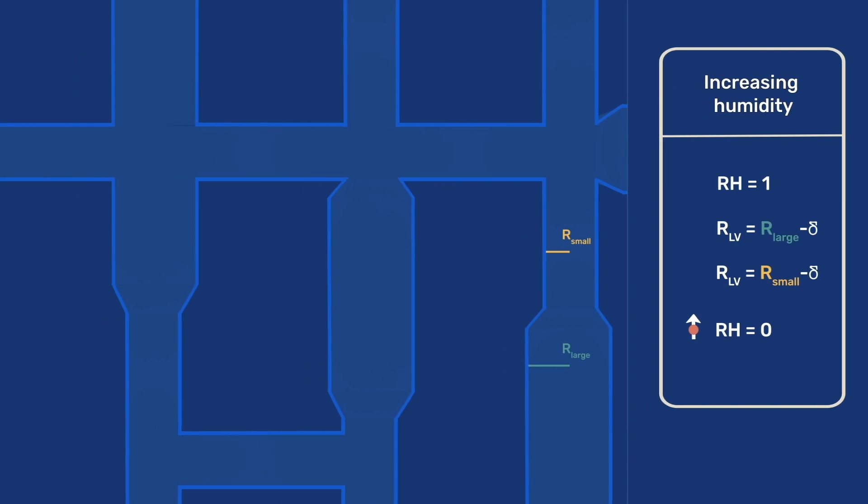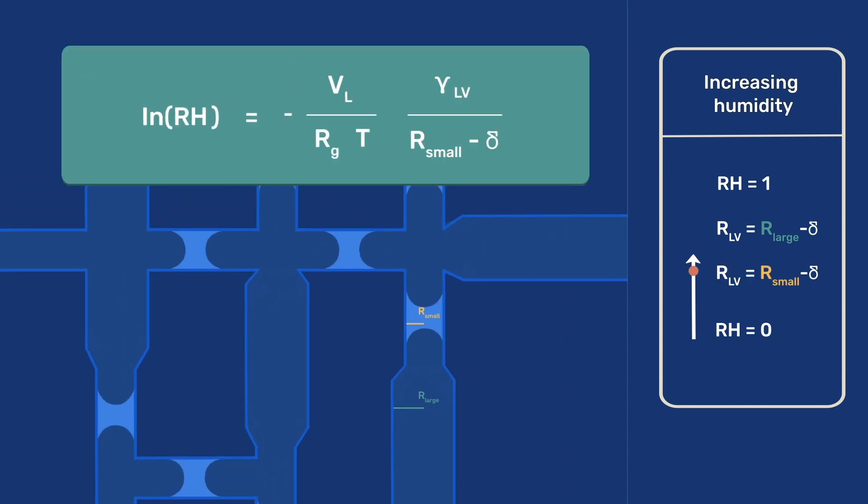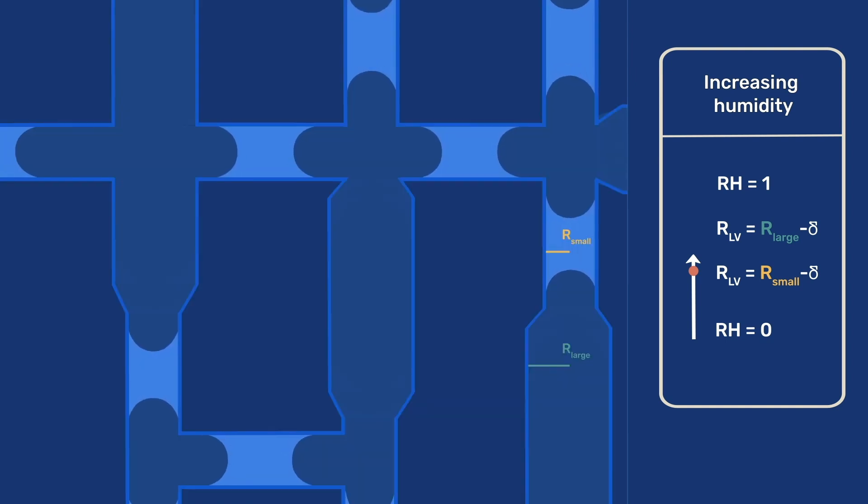In this illustration, using an artificial network with two sizes of pores, R small and R large, condensation occurs first in the small pores when lnRH equals minus VL over RT, gamma LV over R small minus delta. As more humidity enters the porous network, it condenses in the smaller pores until their menisci reach their ends.